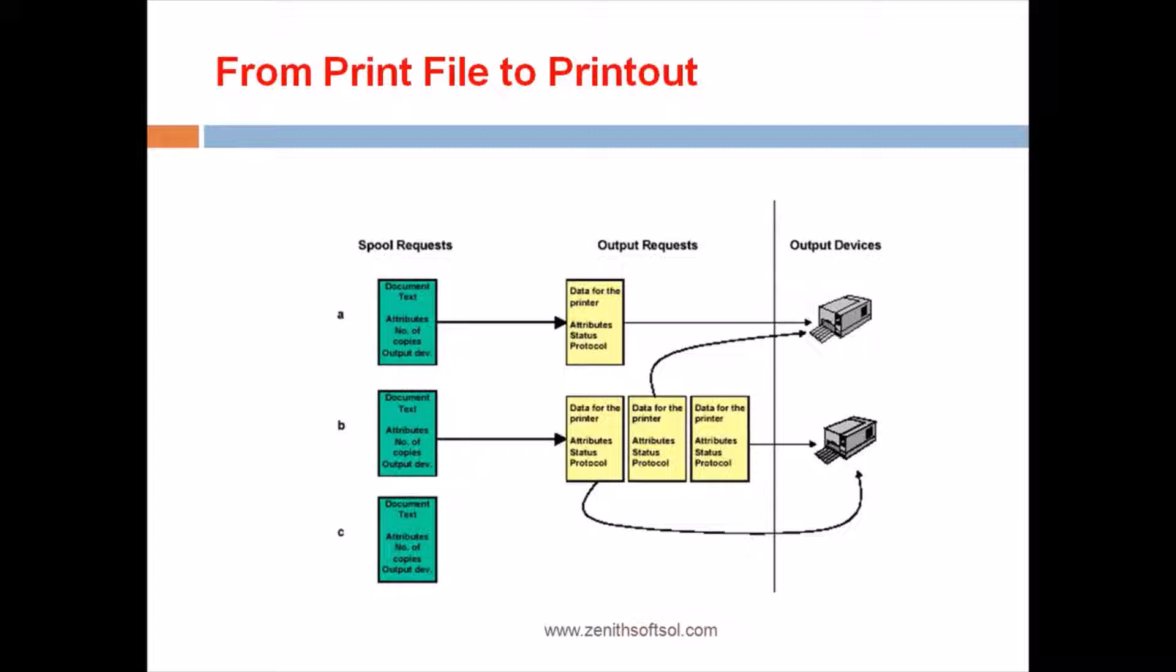In situation B, an output request is created for spool request immediately after the spool request is created. So this output request is then printed on a device later. A user creates two additional output requests for the same spool request, so these two output requests are printed on two different devices.